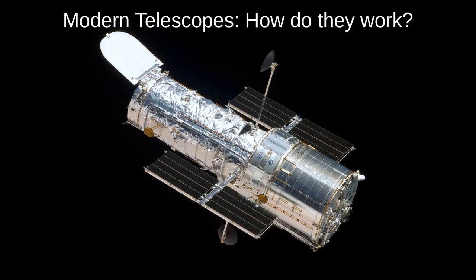In part two, we'll look at using spectral lines to analyse stars' composition, and consider what we can learn using different parts of the electromagnetic spectrum.